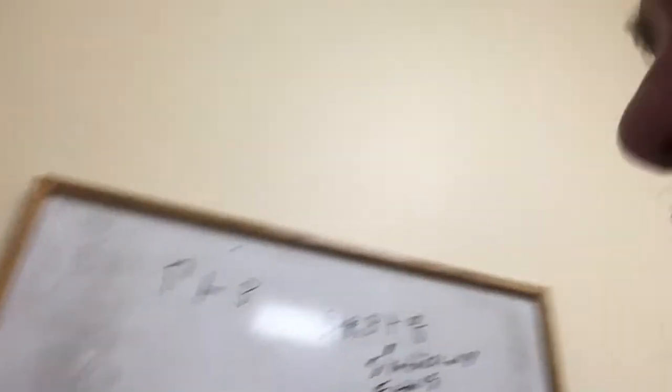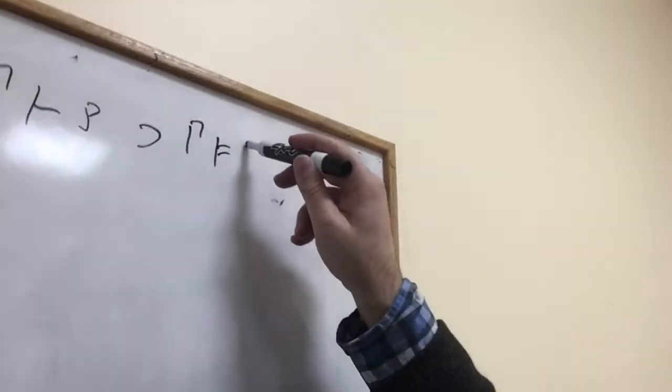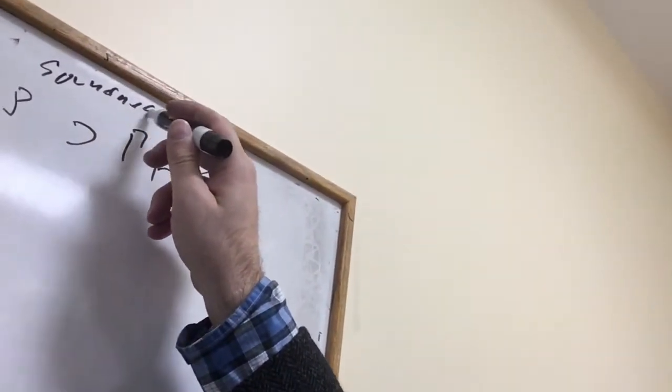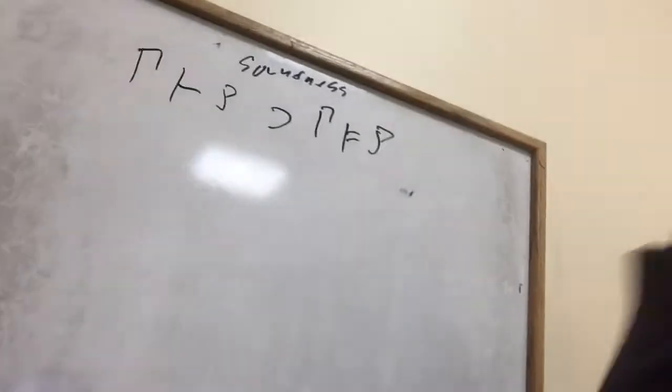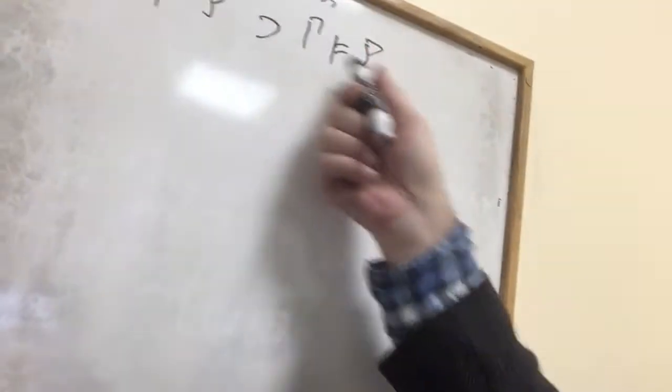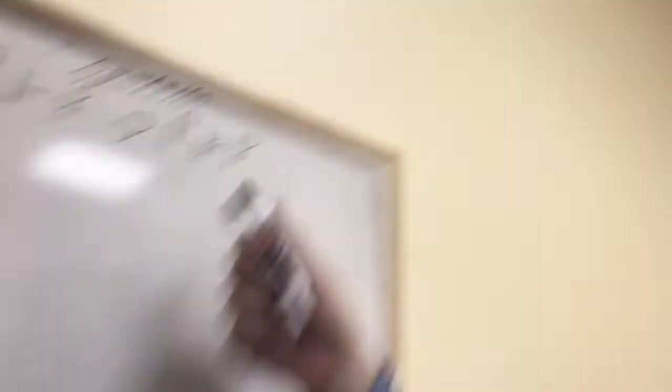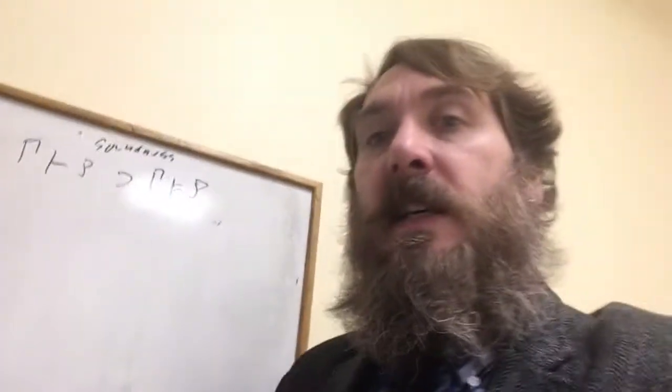What we would like to show is that everything we can prove is also going to be something that is semantically entailed. This property is called soundness. Roughly, it says that all the things we can prove are things that are semantically entailed, where semantic entailment for propositional logic is defined in terms of truth tables.